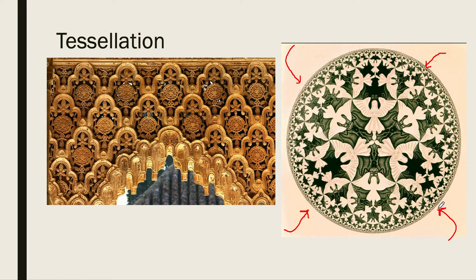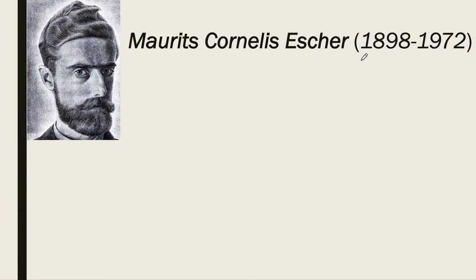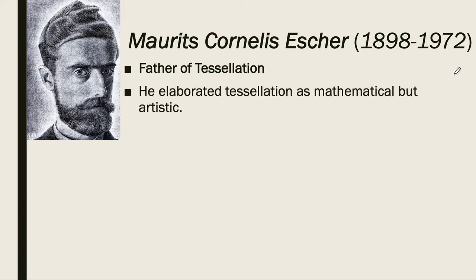This is one of the very many art and tessellation designs by Maurits Cornelis Escher. Escher was born around 1898 and died in 1972. He is considered to be the father of tessellation. He elaborated tessellation as mathematical but also artistic. One particular example of Escher's work is the Angels and Demons we just showed.